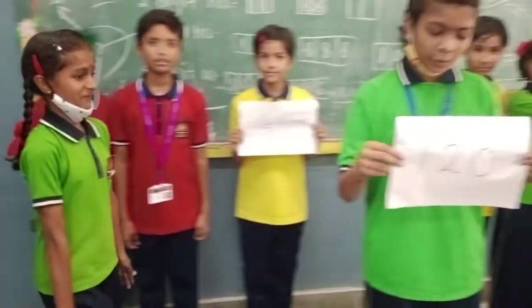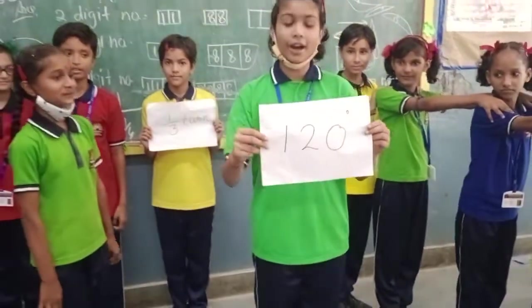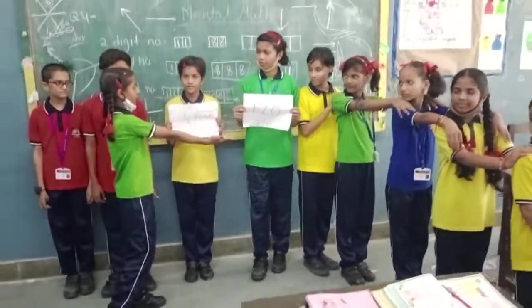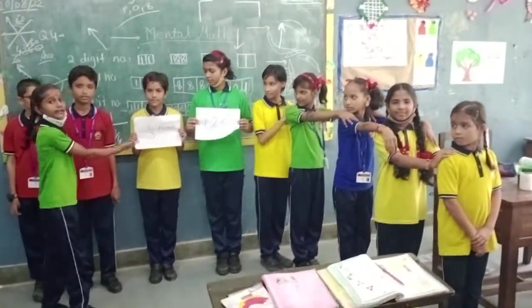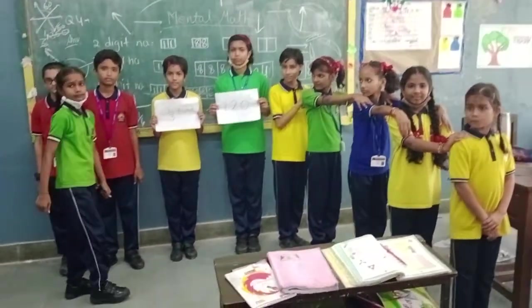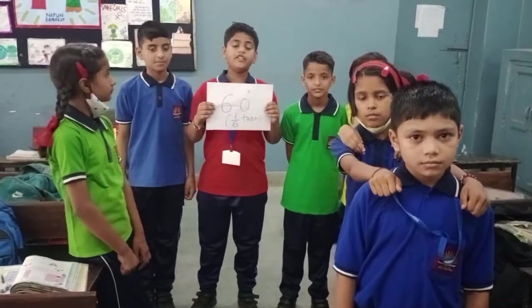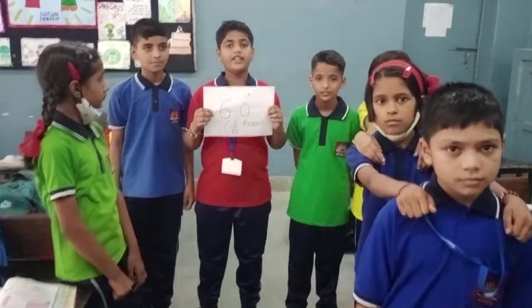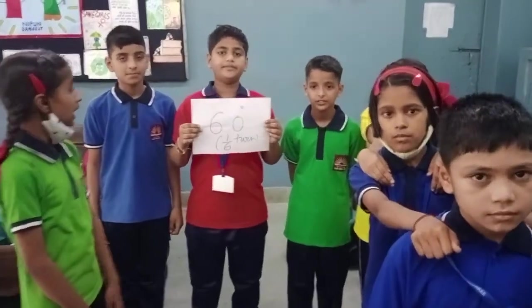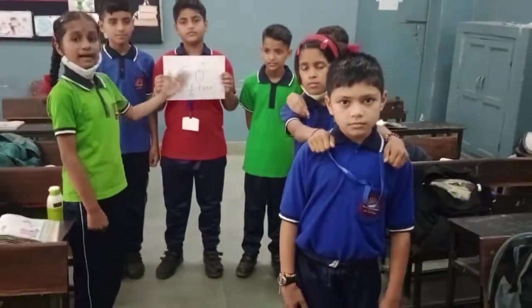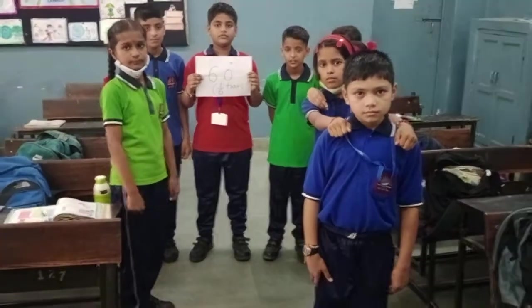Our group is showing 120 degree. 120 degree means 1 by 3rd turn. Our group is showing 60 degree. 60 degree means 1 by 6 turn.